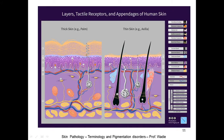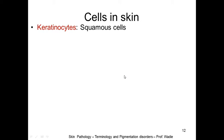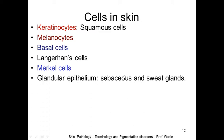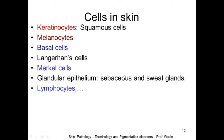The cells in the skin include keratinocytes — the squamous cells that compose the majority of skin cells. In addition, there are melanocytes, which are not too many but give the melanin pigment that gives us our characteristic color. There are also basal cells, Langerhans cells of the macrophage-monocyte series responsible for the immune system, Merkel cells with sensory/pressure functions, and glandular epithelial cells from sebaceous glands.